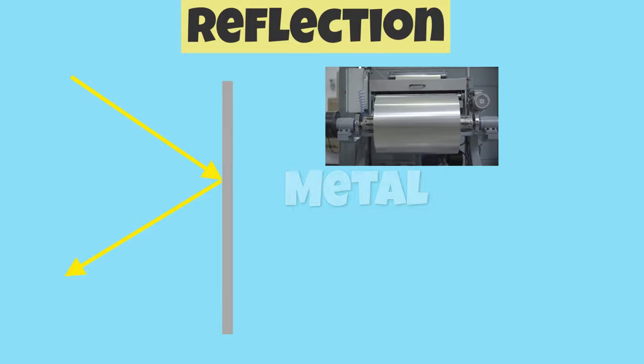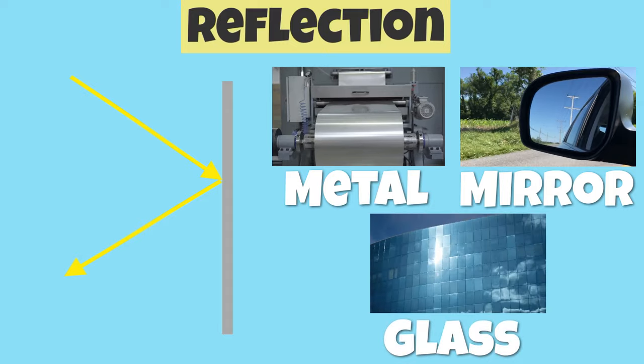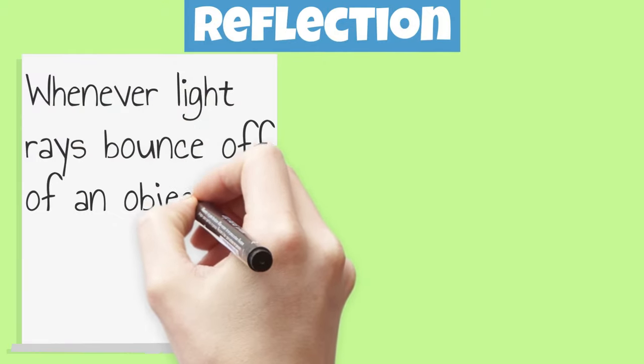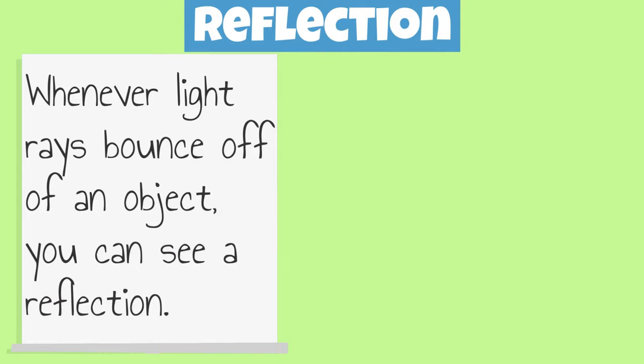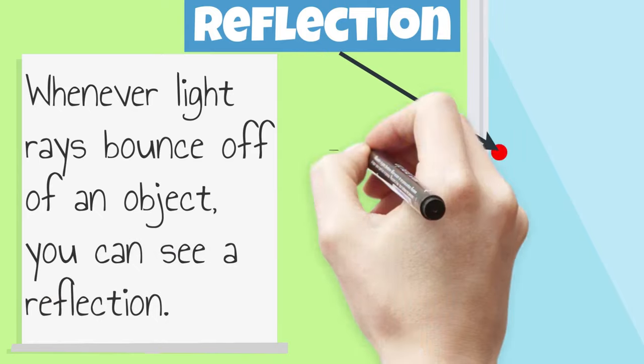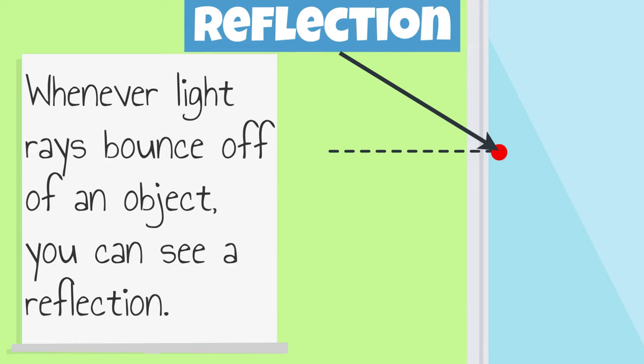Objects with a smooth and shiny surface like metal, a mirror, and glass reflect light. Whenever light rays bounce off of an object, you can see a reflection. A line perpendicular to the surface may be drawn at the point of incidence where light rays are reflected.